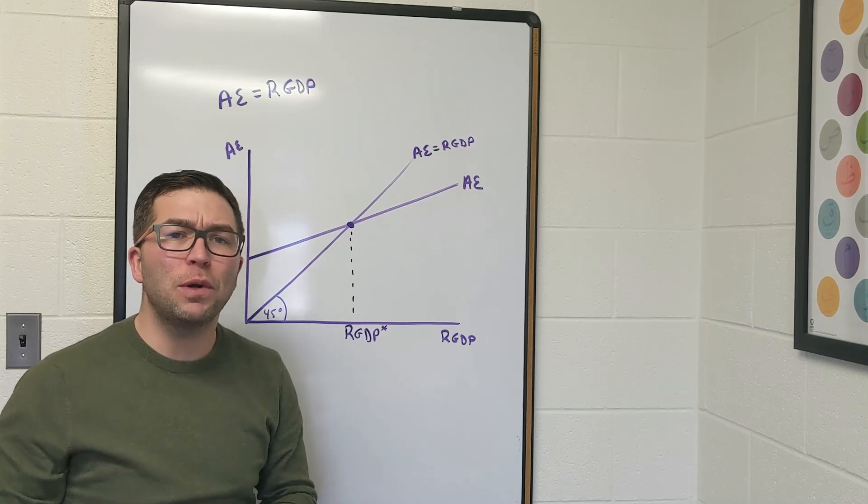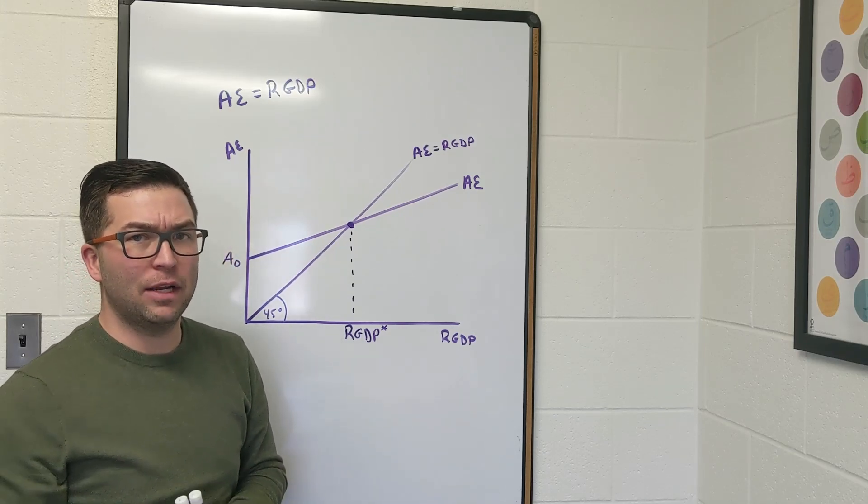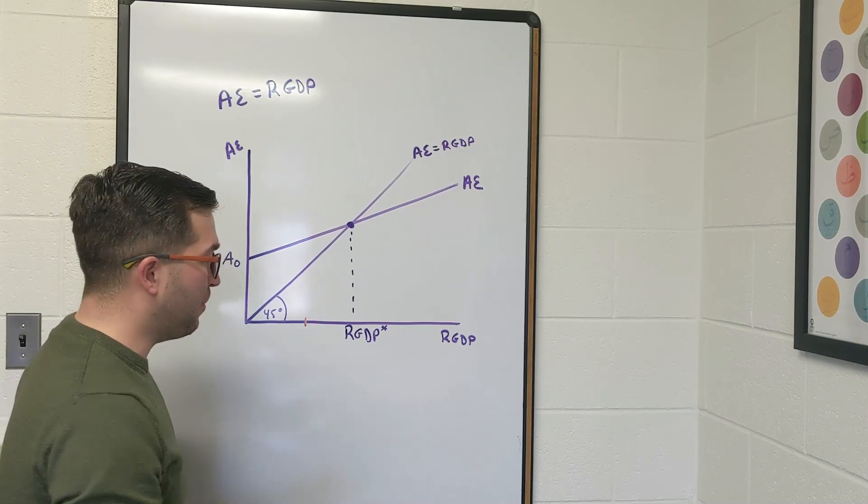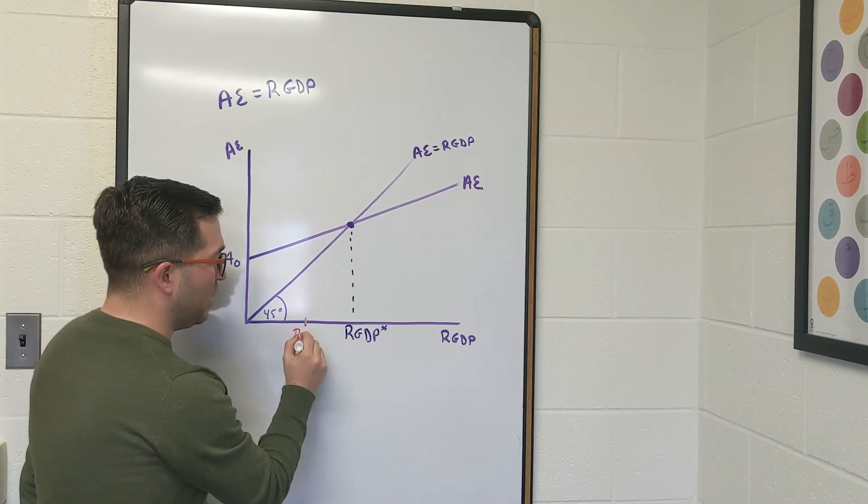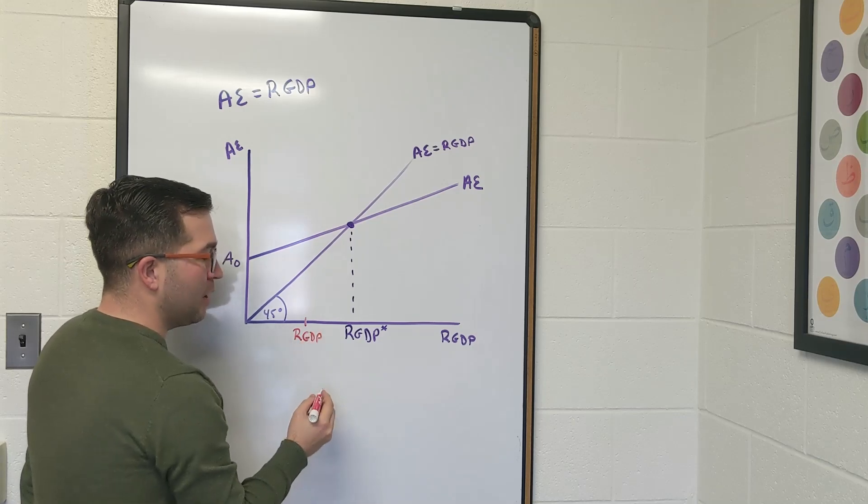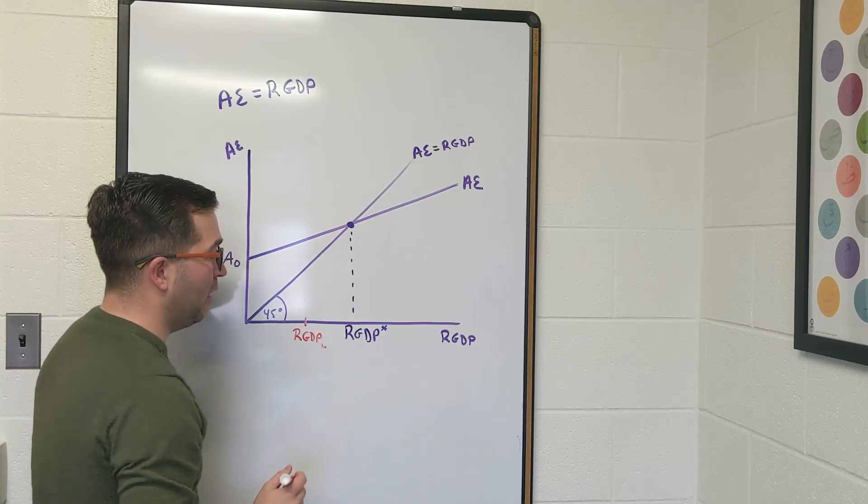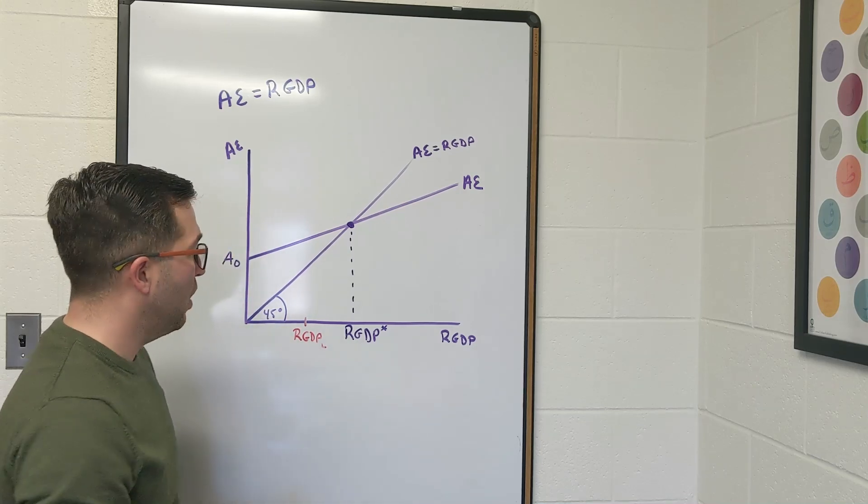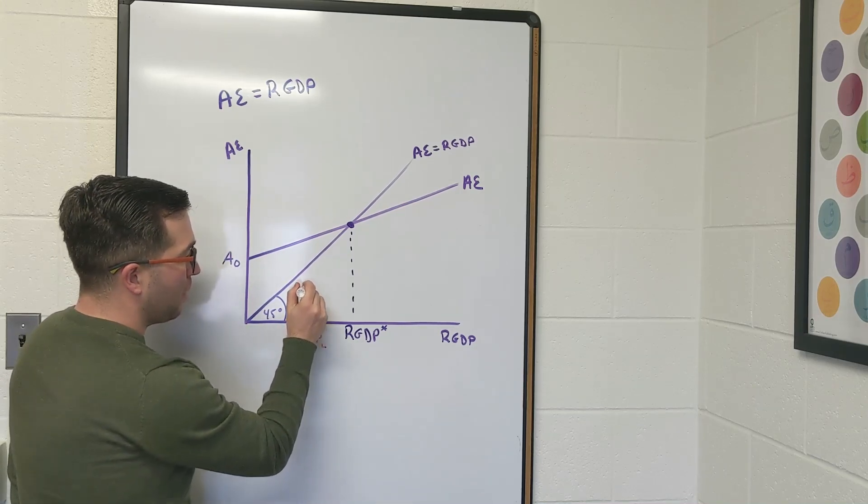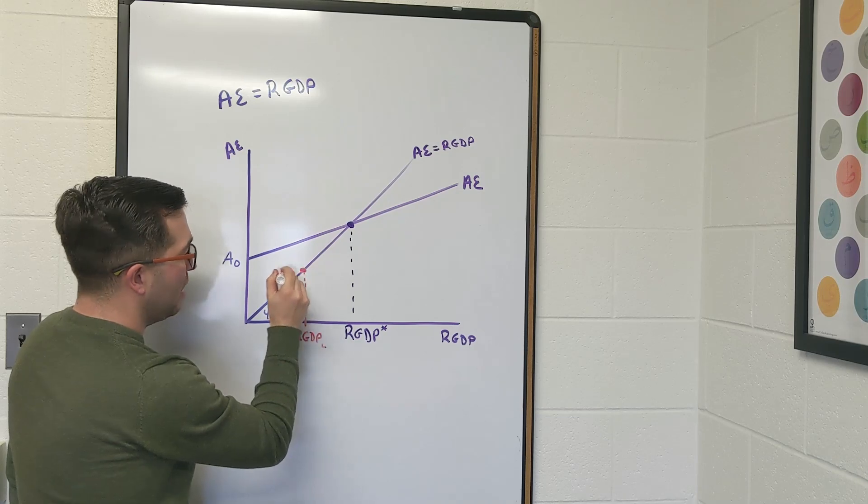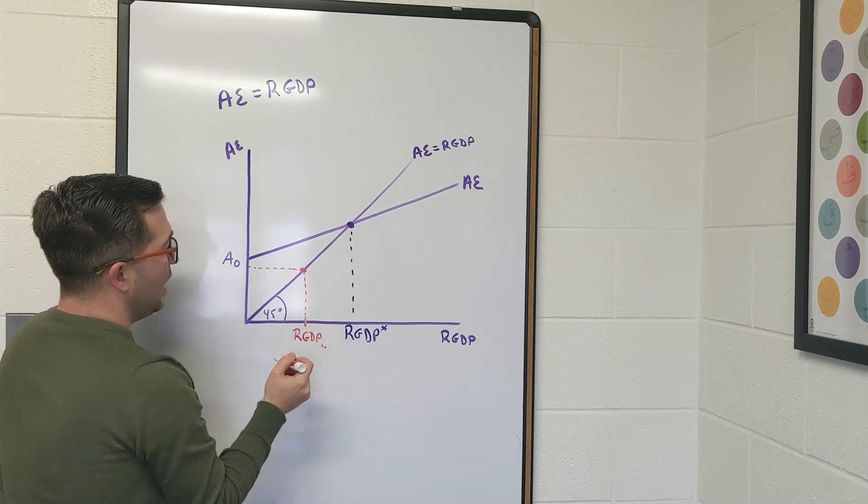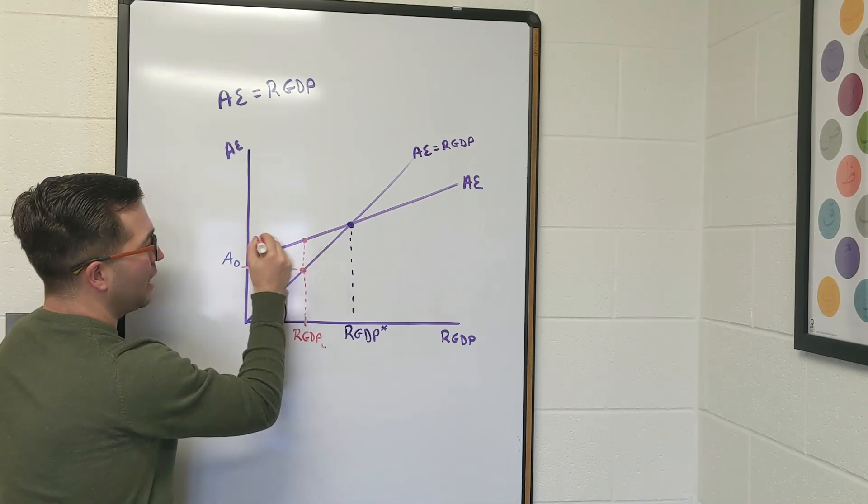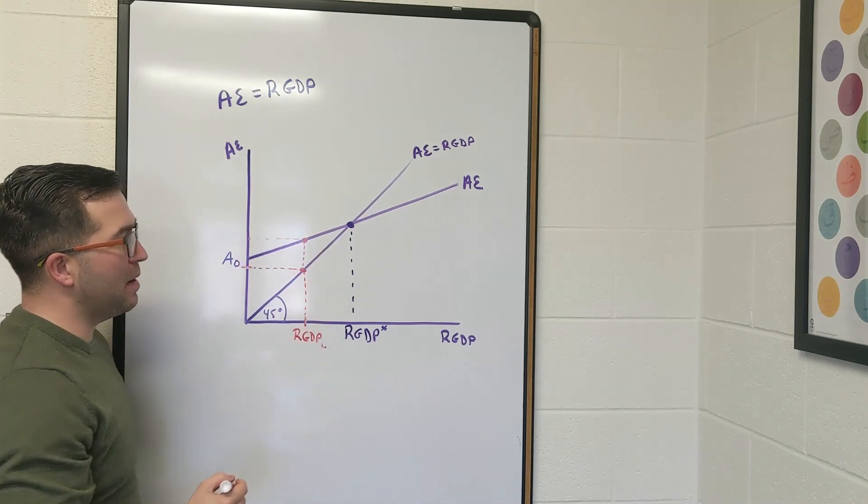So let's explore if we're out of the macroeconomic equilibrium. What if we have a much lower level of real GDP? What if we have some real GDP down here? I'm just going to call this real GDP L because it's lower than what the equilibrium point is. Well, what do I know? What this tells me is that real GDP L is going to be here, but aggregate expenditure is up here.